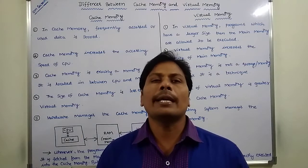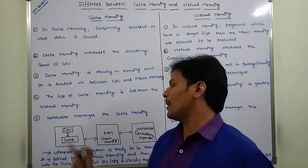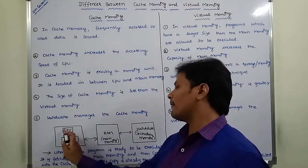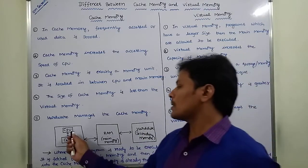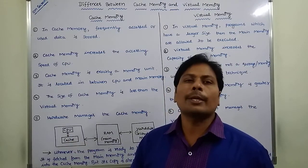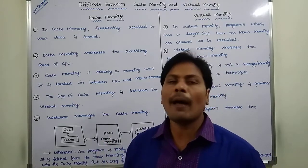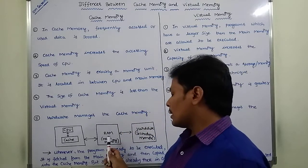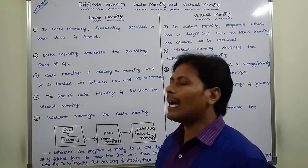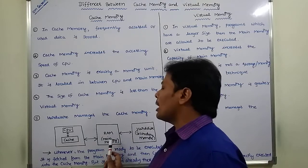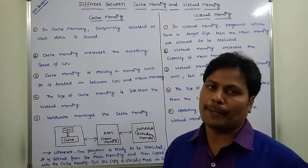Cache memory is located in between the CPU and main memory. So this is the CPU and this is the main memory — cache memory is located in between them. Suppose the CPU wants to execute some programs; these programs can be retrieved from the main memory and passed from main memory to the CPU. While traveling from main memory to the CPU, one copy of the programs is stored in the cache memory.